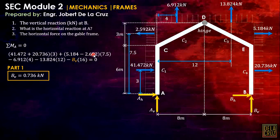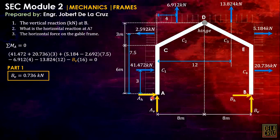That is the answer for part 1. Please correct the value 2.592 — it may have caused a slight discrepancy in the calculation. The important thing is the principle. For the vertical reaction at A, AV, it is recommended to take summation of moment about B, then use summation of forces vertical as a check.